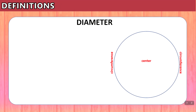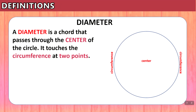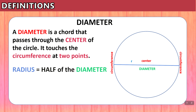So let's look again at the diameter. The diameter is a chord that passes through the center of the circle. It touches the circumference at two points — we start at the circumference, go toward the center, and then head again toward the circumference. This one line is called the diameter, but it's made up of this part here, which is a radius. And the radius is half of the diameter.